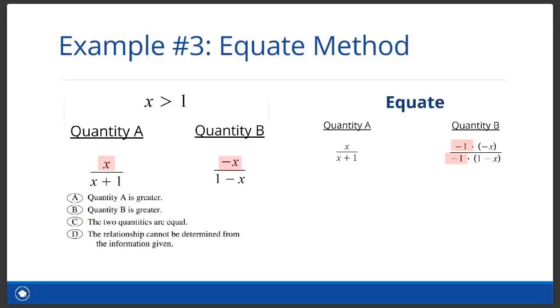When comparing two fractions, the equate method is often used because you want to make either the tops look the same or the bottoms look the same. In this example, the tops are pretty close to each other, so let's make them the same. We equate them by multiplying quantity B by negative one over negative one, so the top becomes X just like quantity A. Now we have X over X plus one as quantity A and X over X minus one as quantity B. When comparing two positive fractions with the same numerator, we can just ignore the numerator. So by focusing just on the denominator, we can see that X plus one is more than X minus one. So it's like comparing one over a big number to one over a small number. And with positive fractions, the one with the smaller denominator or X minus one is greater. So the answer is B. Quantity B is greater.